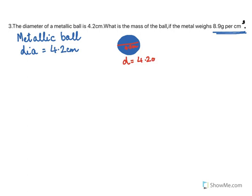If the diameter is 4.2 centimeters, we know the radius will be half of it. Now if you want to know the weight of this metallic ball, how much it weighs, we definitely will have to know the volume.